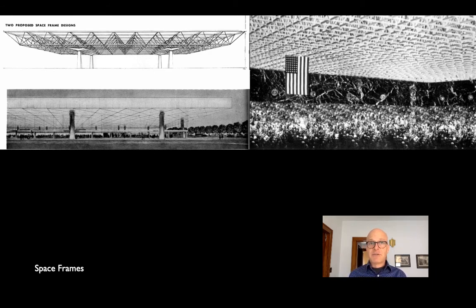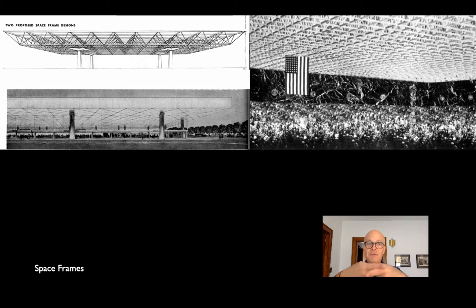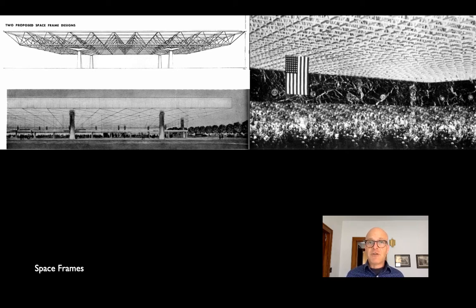So what if we take that principle with a much more efficient system — a vector active structural system — and do the same thing? Turn trusses at right angles to themselves, or even better, make a network where trusses run in multiple directions. We find that when we try to push down on one node of a space frame — a multiple-direction truss — it has to pull down three or four or more directions of truss to actually deflect.